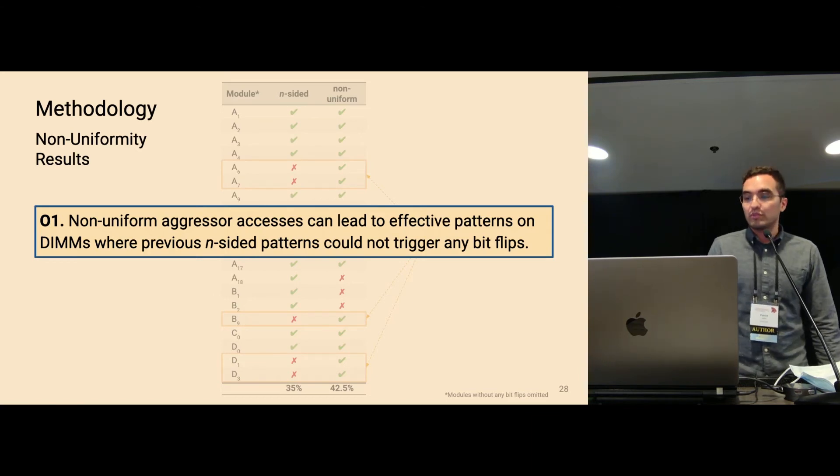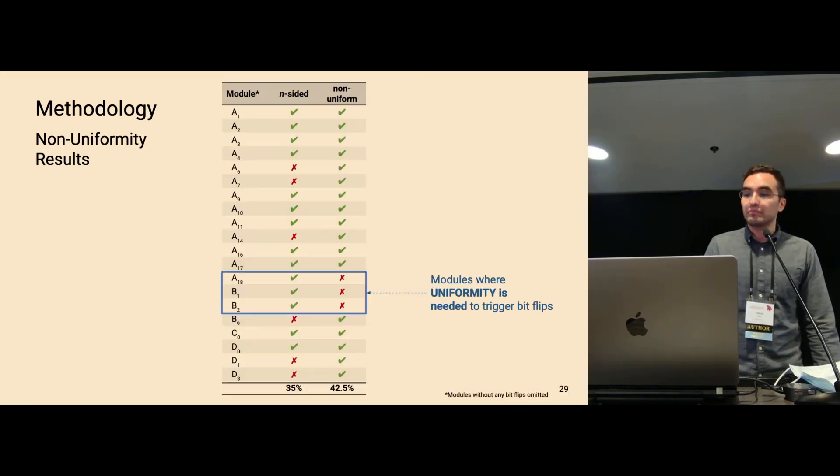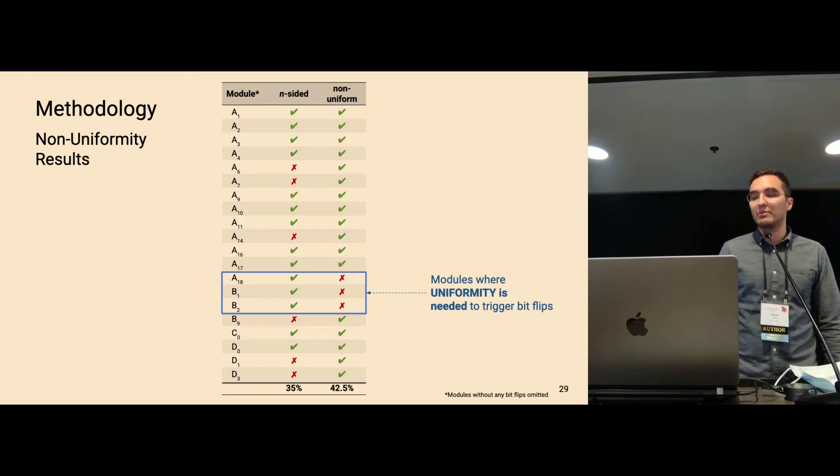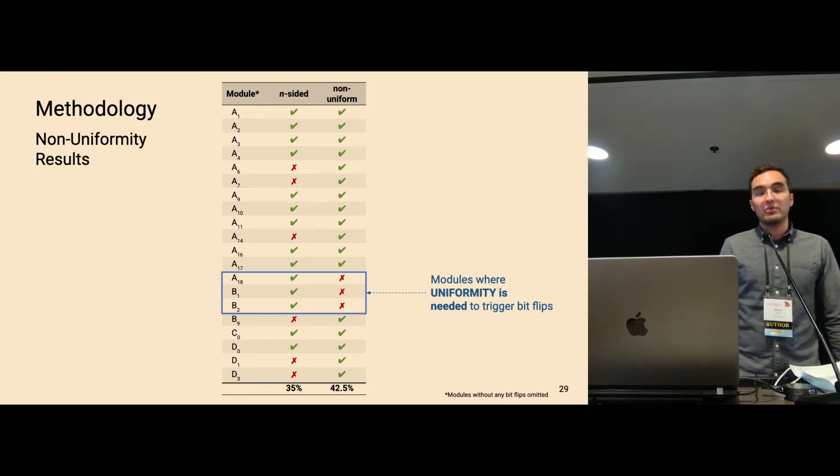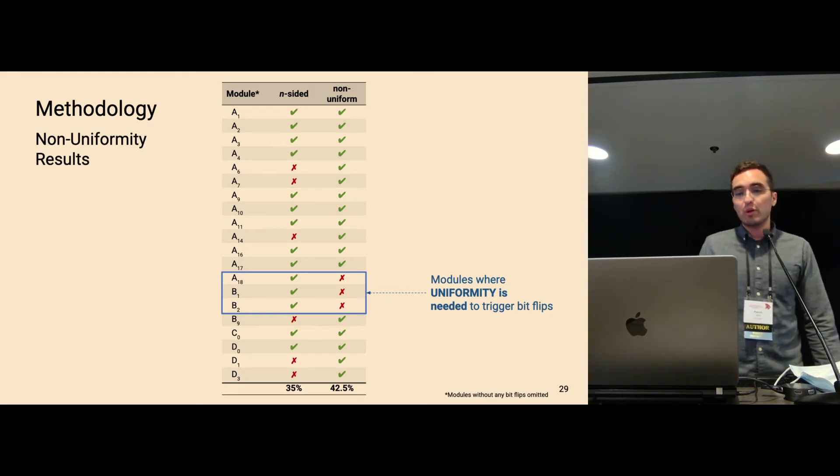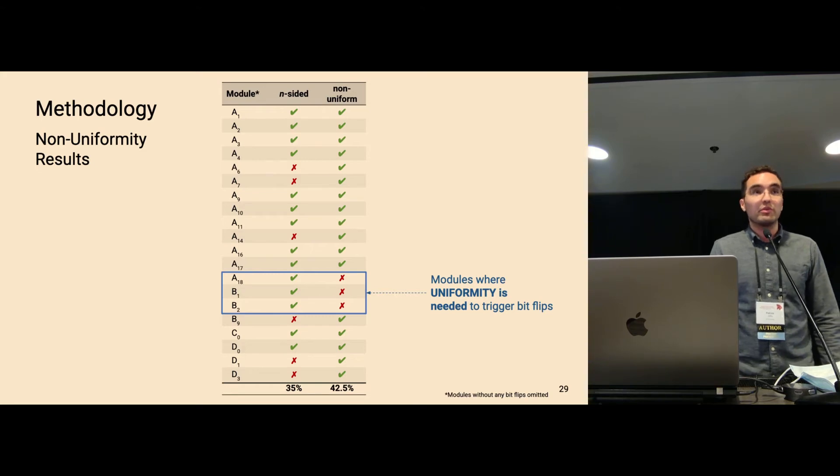Although this improved the results by around 15 percent, there are also cases where uniformity is needed to trigger bit flips. This is why we designed further experiments to explore which properties are important to build effective patterns. So we start with no assumptions and then gradually learn the properties that are important. I will now present the most interesting results from different devices.